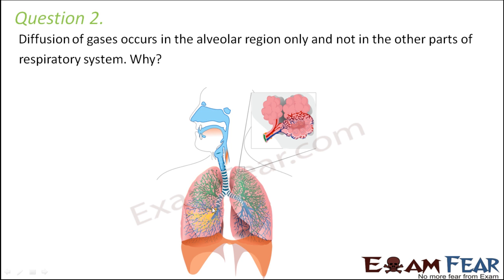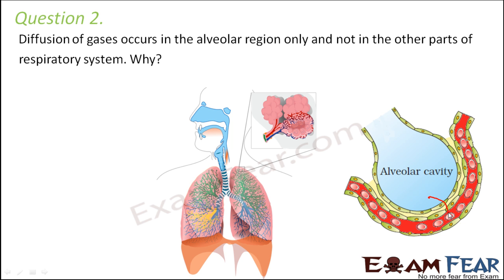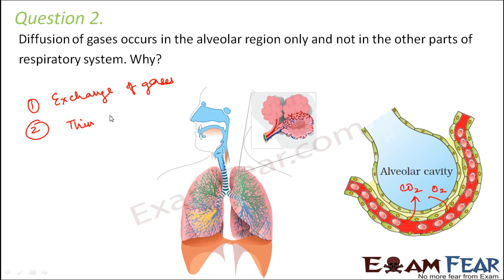For all other parts, the gases are just moving from one part to another, but there is no exchange taking place. At the alveoli, oxygen is given and in return carbon dioxide is received — so exchange of gases occurs here. There are three to four things involved: first, exchange of gases occurs at the alveoli; secondly, the thin alveolar membrane supports the process of diffusion; and the alveolar membrane is also permeable for gases to pass across it.